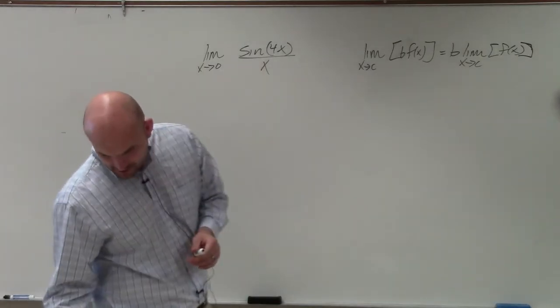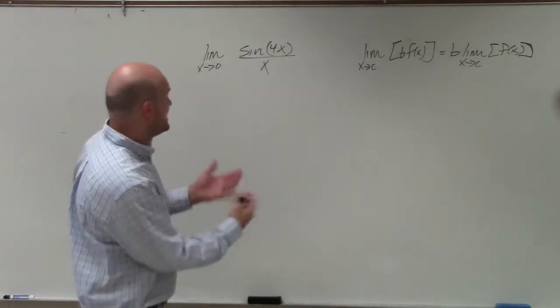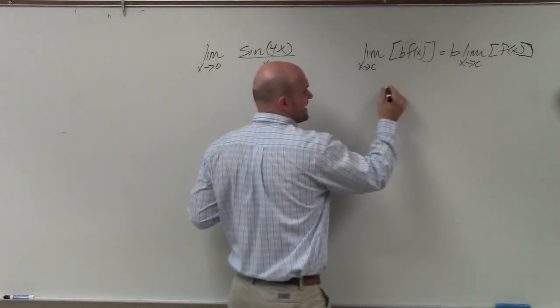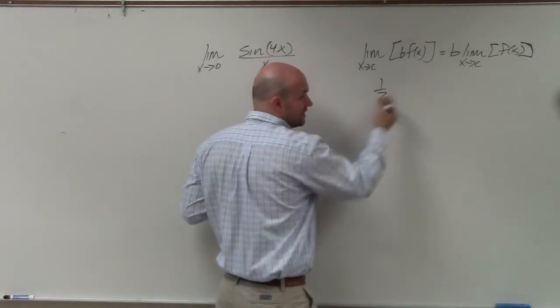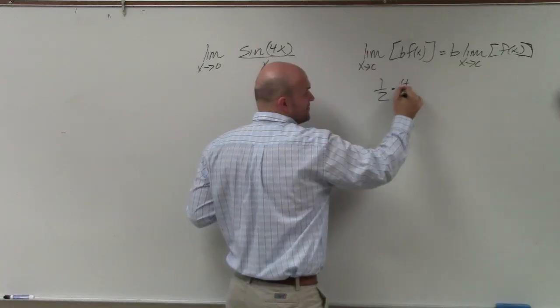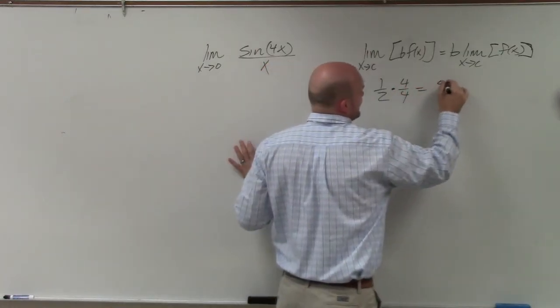So what I want you guys to understand here, and remember also another rule, or another idea, is if you have 1 half and you multiply 1 half by 4 over 4, I'm going to get 4 eighths.